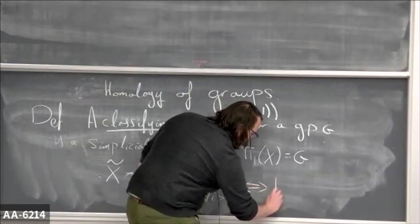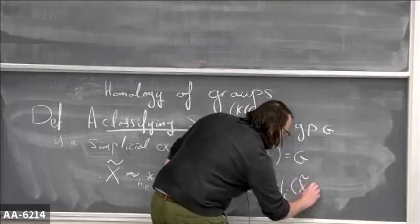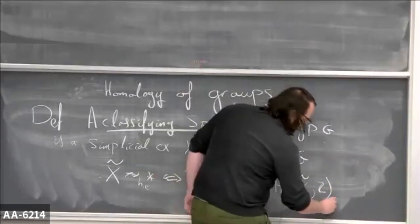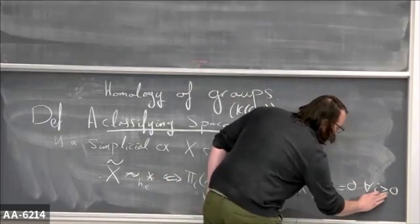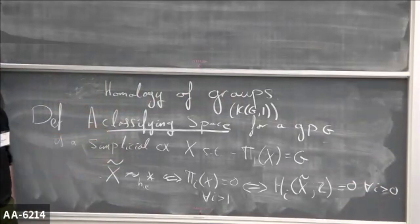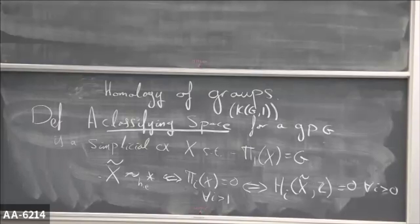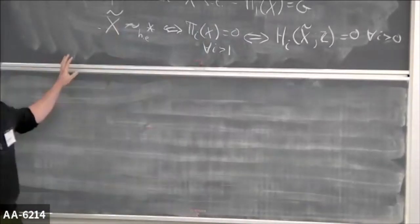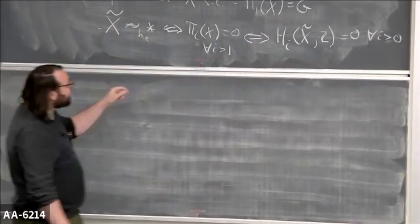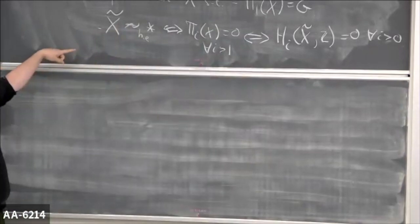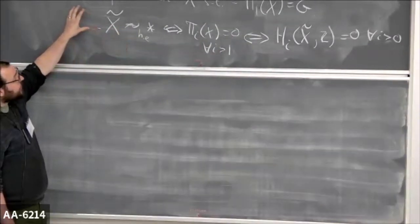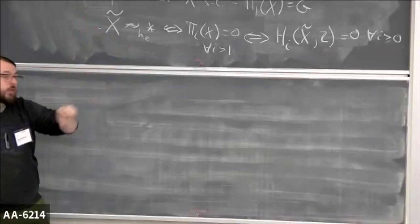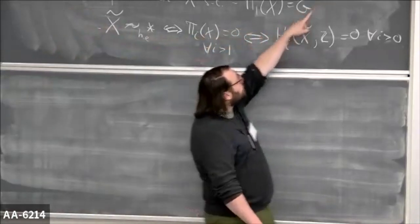Equivalently, perhaps what one would be most interested in today: if you look at the homology of the universal cover with ℤ coefficients, this is zero for all i greater than or equal to one strictly. You can take any of these — pick your favorite. If you look at this space, it's a space with the correct fundamental group. It takes a little bit of work — this is in Hatcher's algebraic topology — that if you take two classifying spaces for a group G then they're homotopy equivalent, so the homotopy type only depends on G.